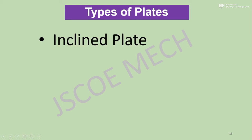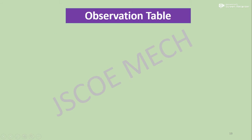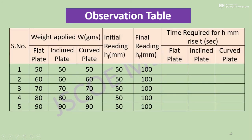We conduct this experiment for three types of plates: inclined plate, flat plate, and curved plate. In the observation table, weights are used in grams — for the first trial, 50 g, then 60, 70, 80, 90 g — and this applies for each kind of plate. Height h is the height difference in the measuring tank; we record the time for h mm rise and write it in the respective column.